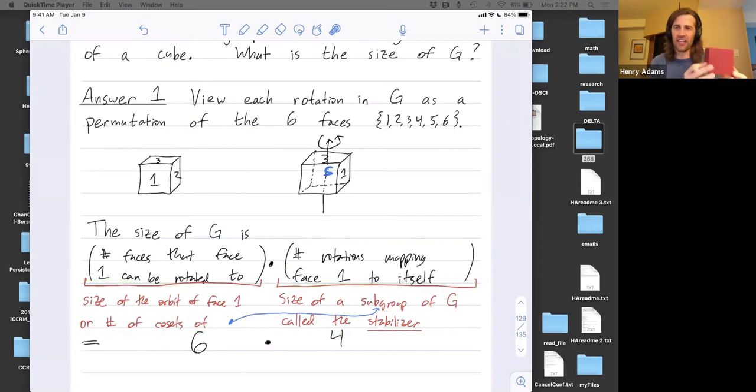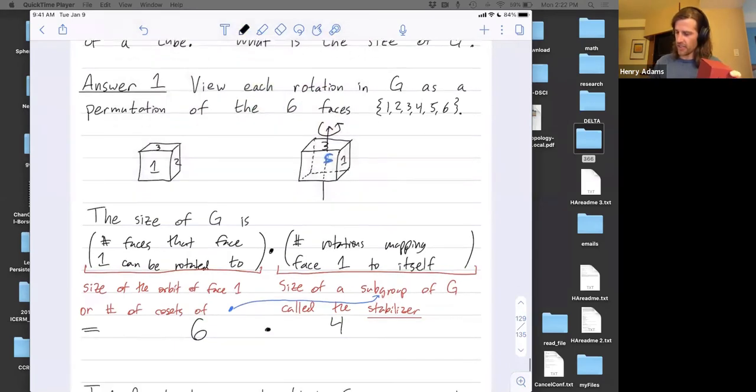But the point is we're trying to count the number of rotations of the cube. We fix a face. We say, how many rotations fix that face? Well, four of them do. If I fix this front face, I have four possible rotations. And then I ask, how many faces could this face get mapped onto? All six different faces. And so the answer is 24.